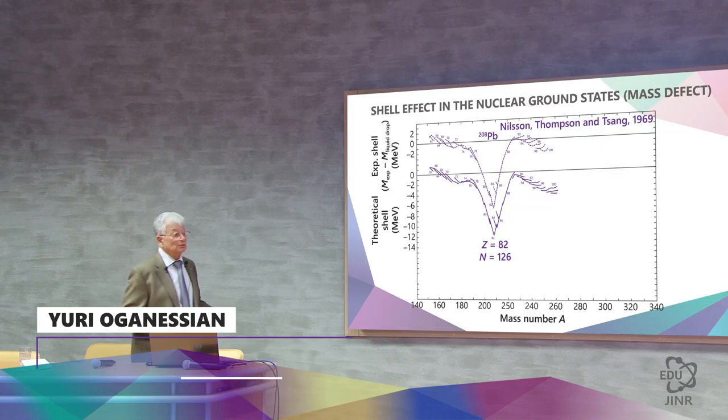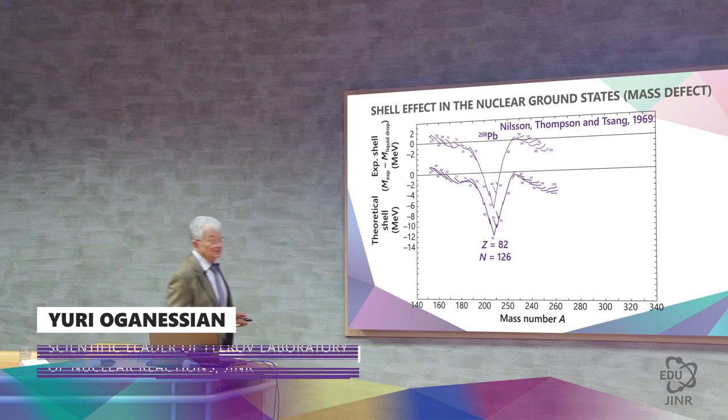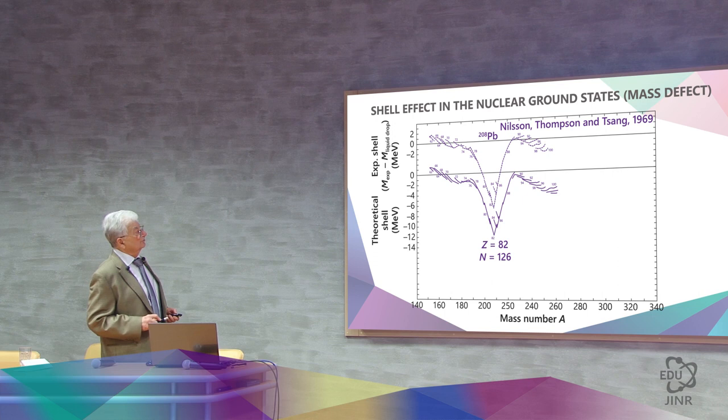Let's take this new theory, which accounts for the shell effect, and see how it describes lead, which turns out to be, on average, more stable than predicted by the liquid drop model.